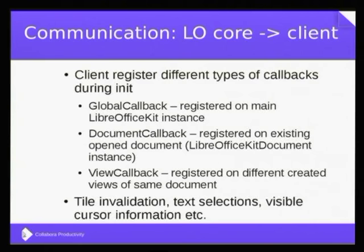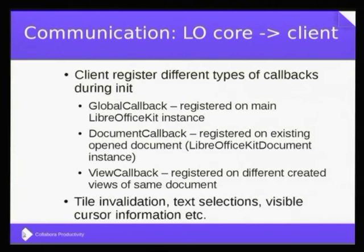Tile invalidation, text selection, and visible cursor information — all this kind of stuff is communicated to the client through these callbacks. The global callback is responsible for things directly related to the document. For example, whenever you load a document it will tell you the status indicator callbacks — like the document has been loaded 10%, 20%, or 90%.